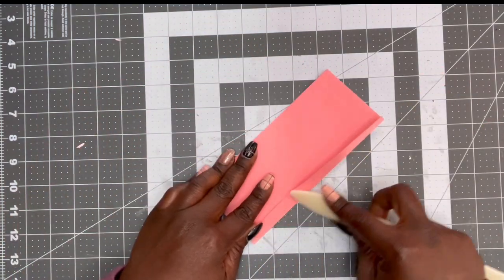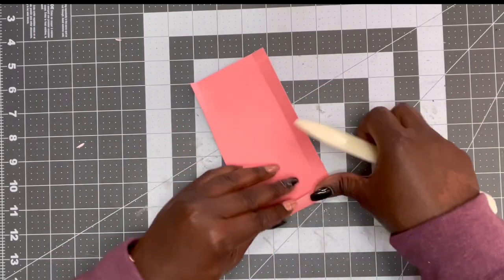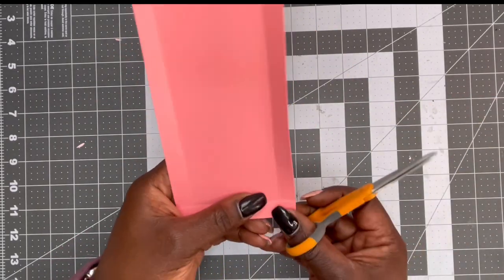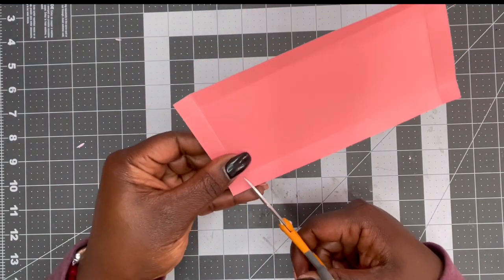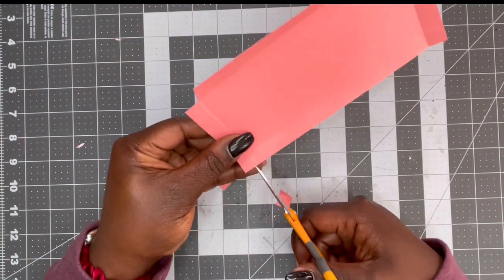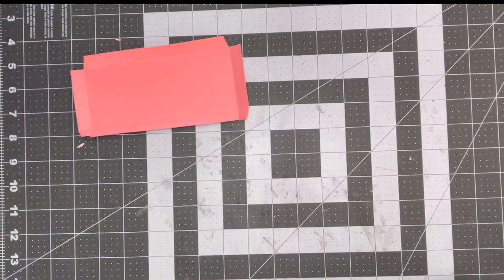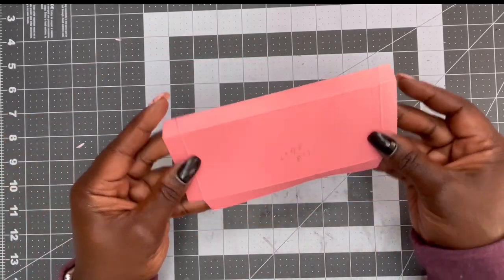Now we're going to work on our lid and we're going to fold on all of our score lines. And on one side of the lid, you are going to completely remove your corner little squares. So that's on one side. And then on the other side, we are going to cut up on those little squares up onto the score line. And I did cut little notches on the ends as always.